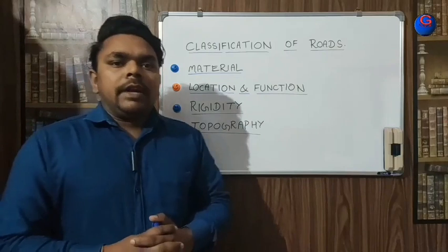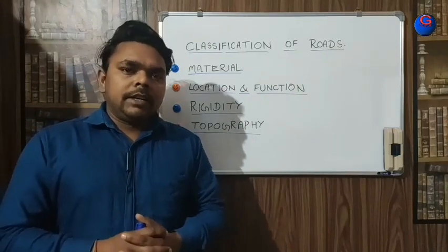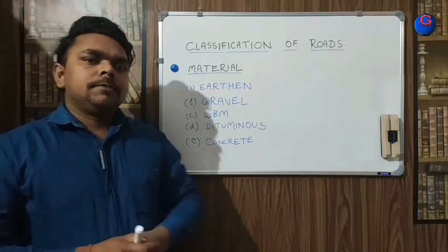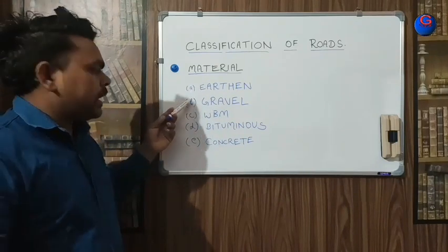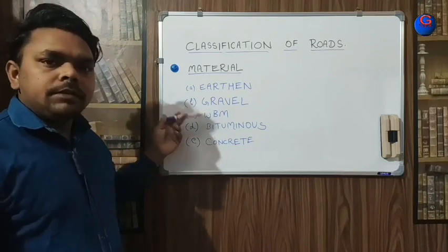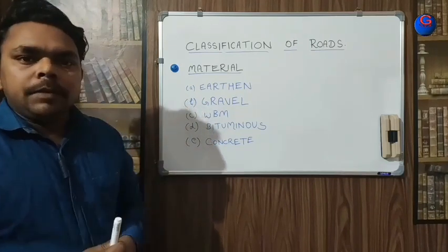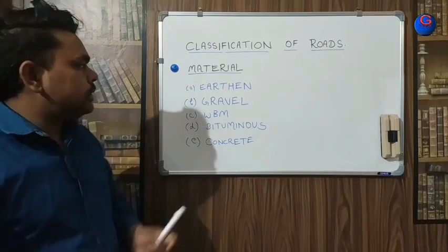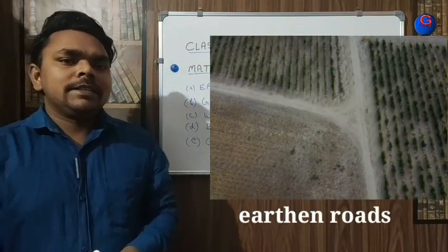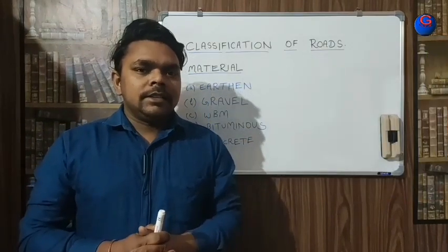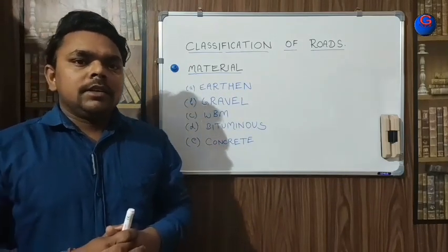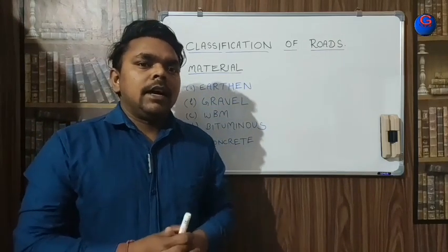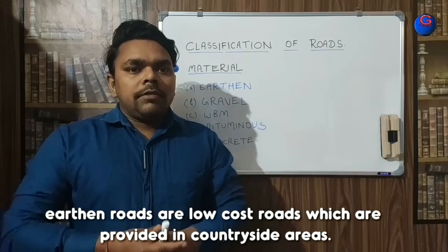Let's talk about the material factor for classifying roads. The roads based on material are: number one, earthen roads; then gravel roads; water bound macadam (WBM); bituminous roads; and finally concrete roads. Earthen roads are very low cost roads which are provided only in countryside areas — typically agricultural land where not much development has been done.